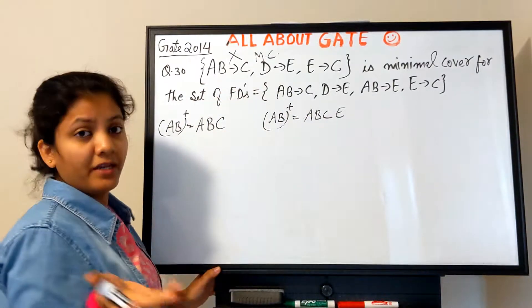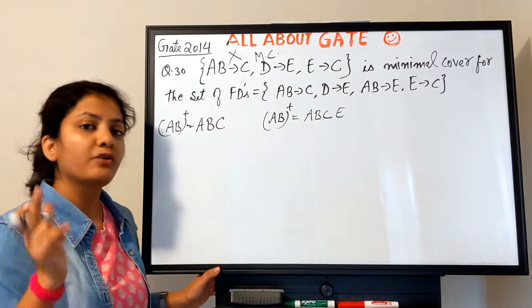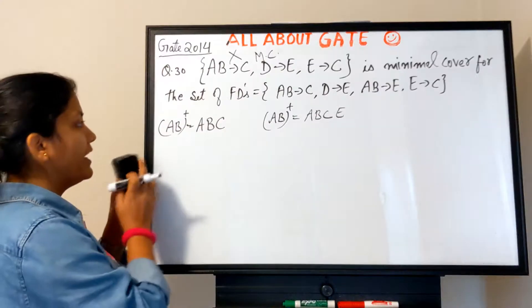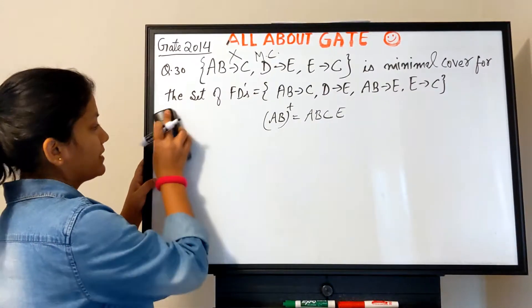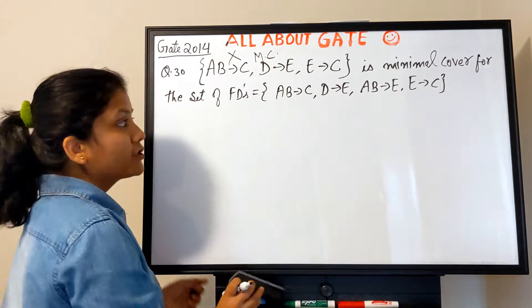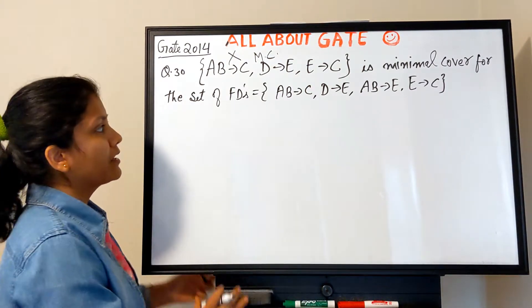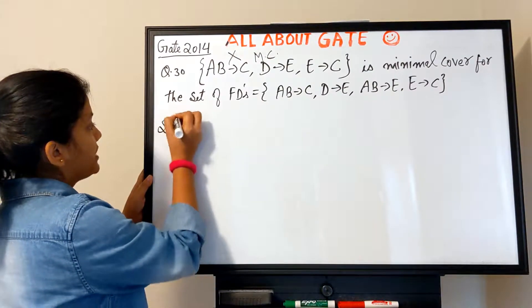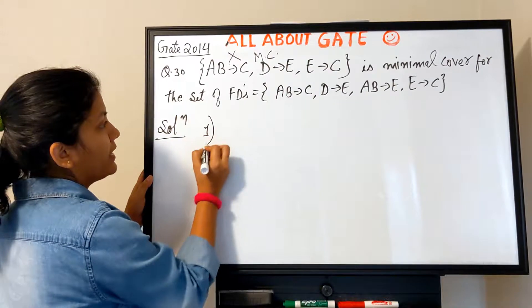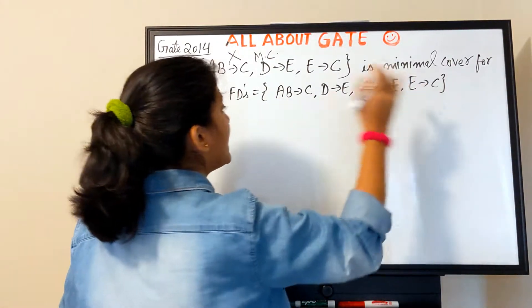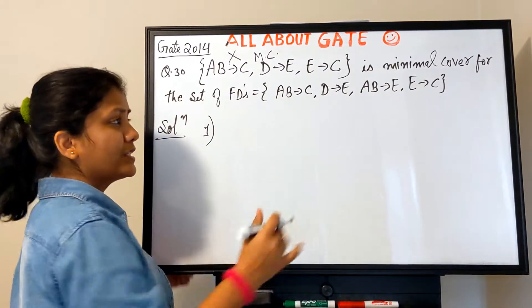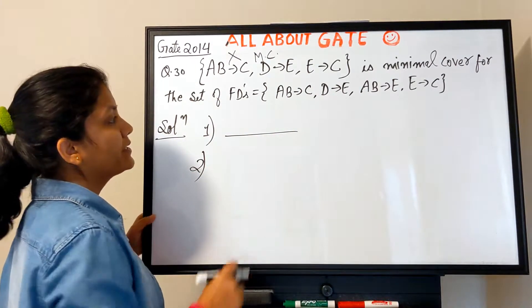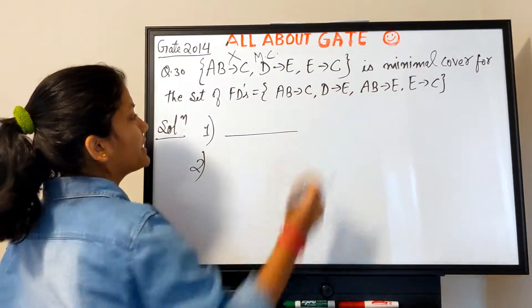So the statement is false. But for practice, let's find the actual minimal cover. Step one — singletonize the RHS: there are no RHS with multiple attributes, so it remains as is. Step two — check for extraneous attributes in the LHS. Compute A⁺: gives only A. Compute B⁺: gives only B. Neither A nor B alone determines C, so AB must remain together.